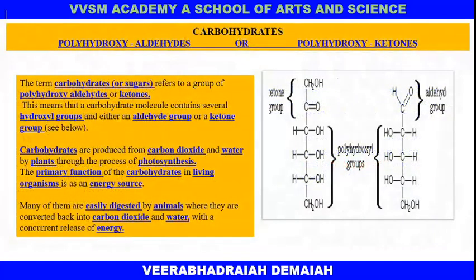Polyhydroxy aldehydes and polyhydroxy ketones are nothing but carbohydrates, because they contain aldehyde and keto groups. If the monosaccharide contains an aldehyde group, they are called aldoses. If the carbohydrate contains a keto group — that is, a carbonyl group — they are called ketoses.